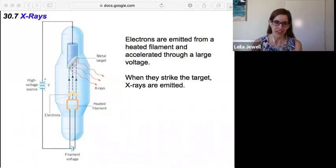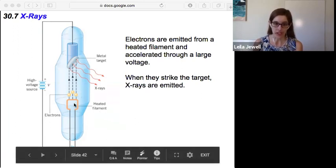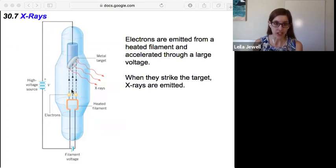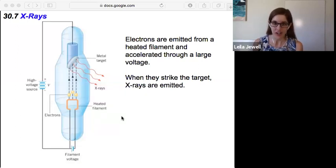Section 30.7, x-rays. X-rays were first discovered by using a high voltage source that accelerates electrons. If you heat a filament, electrons are given off, and if the electrons are moving fast enough and they strike a metal target, then they give off this radiation light but in the region of x-rays. This is one way you can produce x-rays.